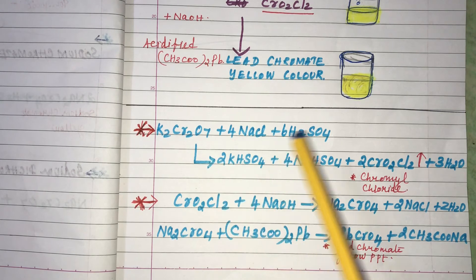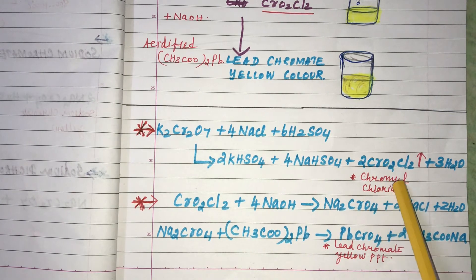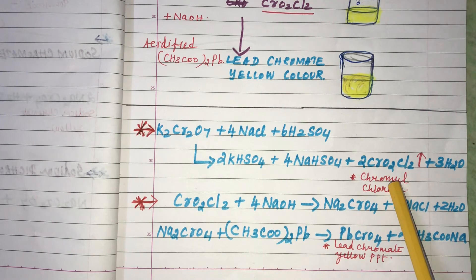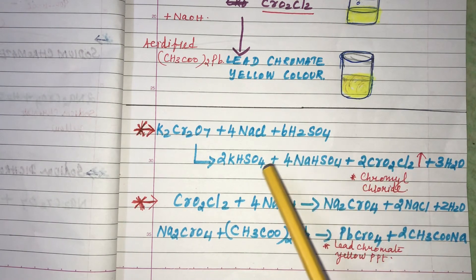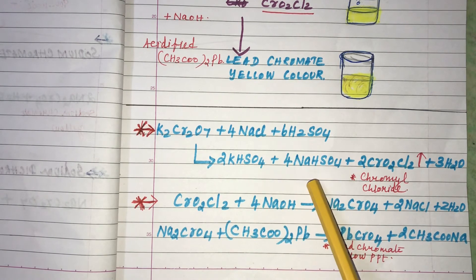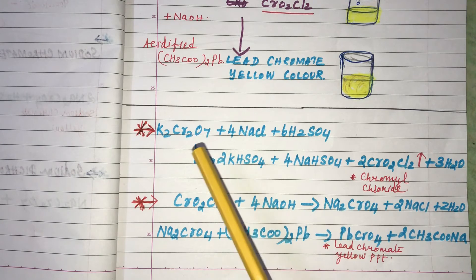On heating, it forms the red-orange vapours of Chromyl Chloride, CrO₂Cl₂ — specifically 2CrO₂Cl₂. Along with that, it also forms Potassium Bisulfate, Sodium Bisulfate, and H₂O.